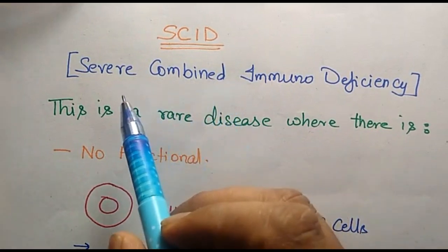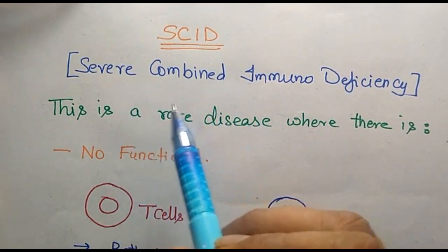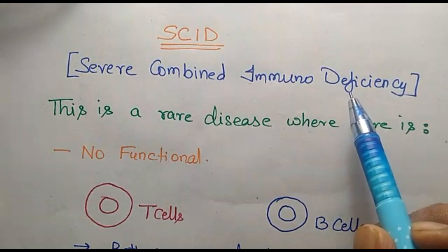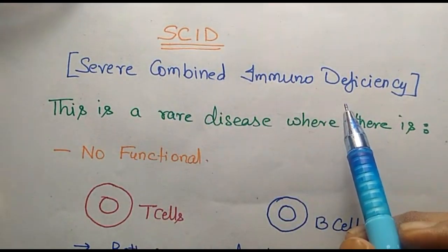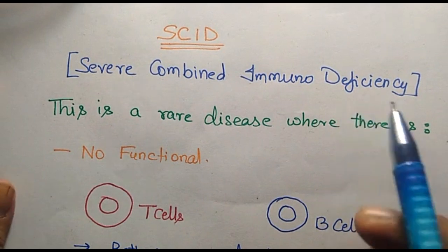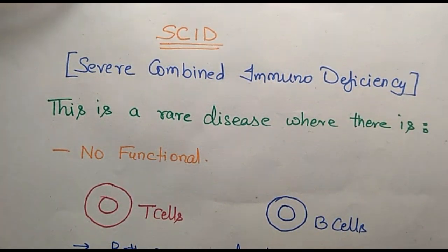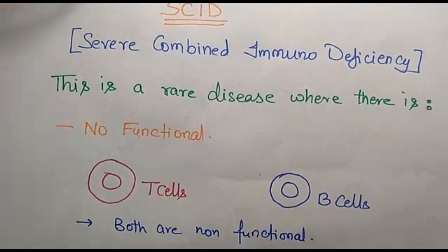SCID, or what we know as Severe Combined Immunodeficiency, is a set of disorders which affect a newborn. This is a very rare disorder.